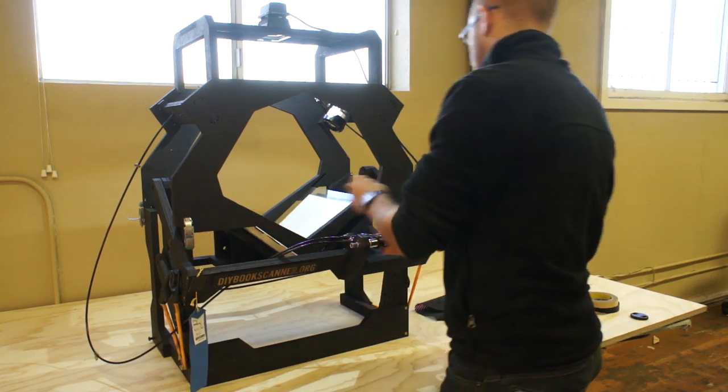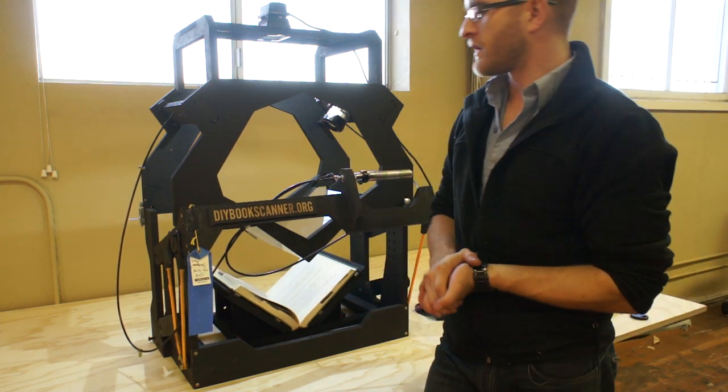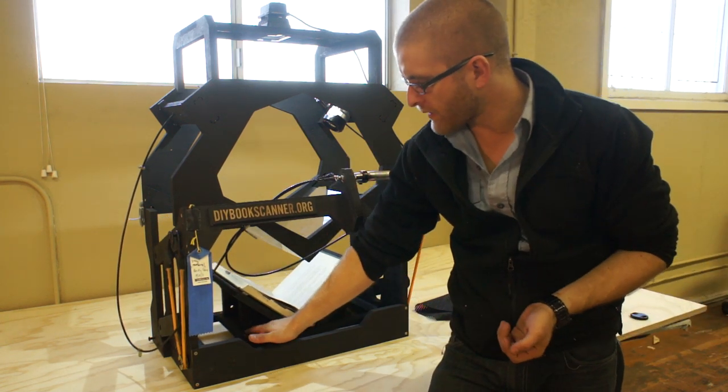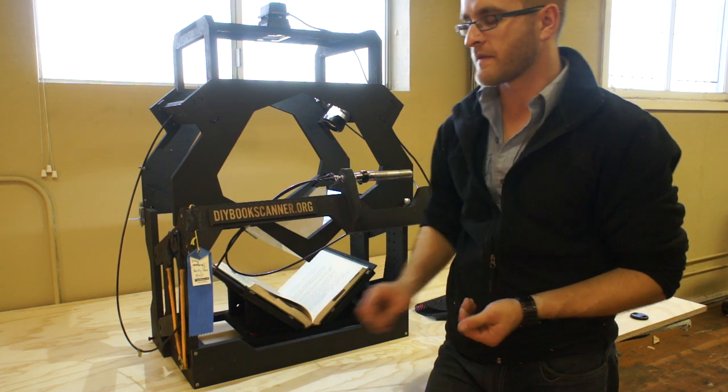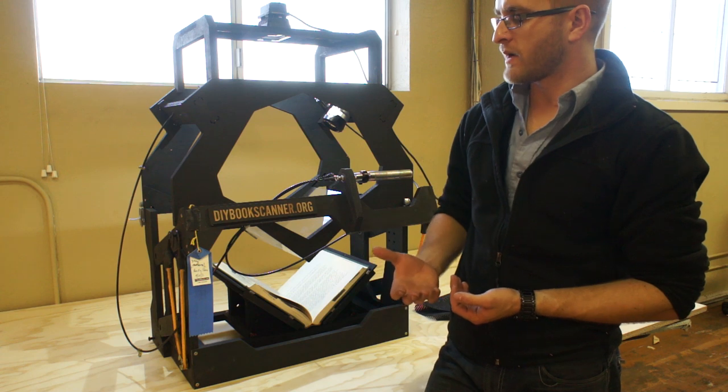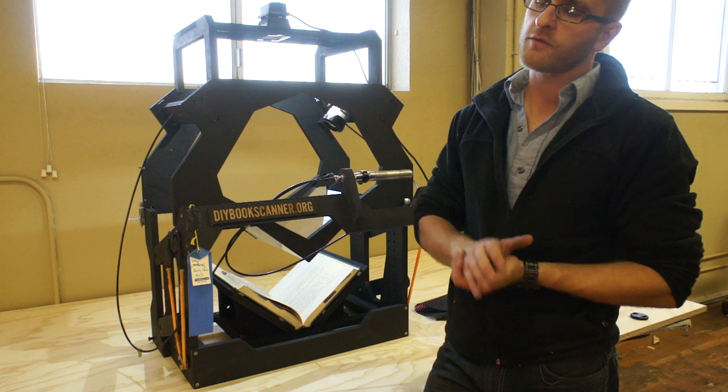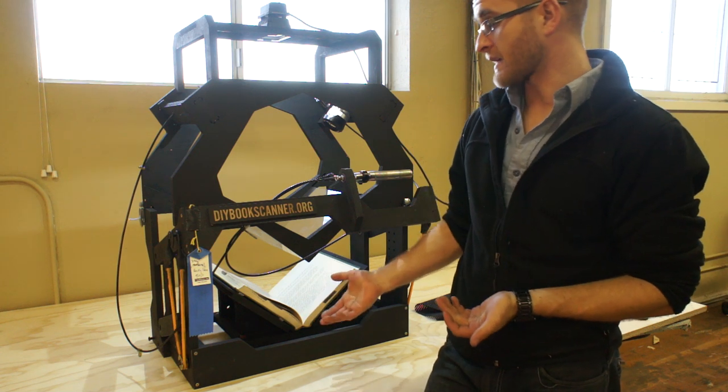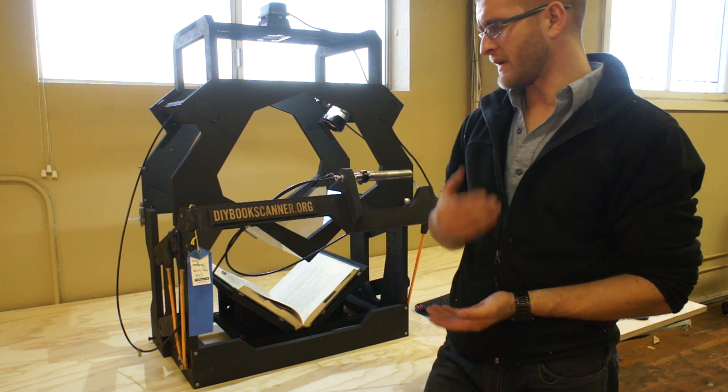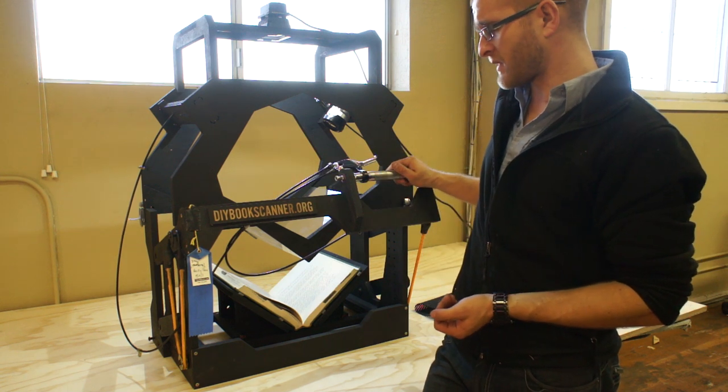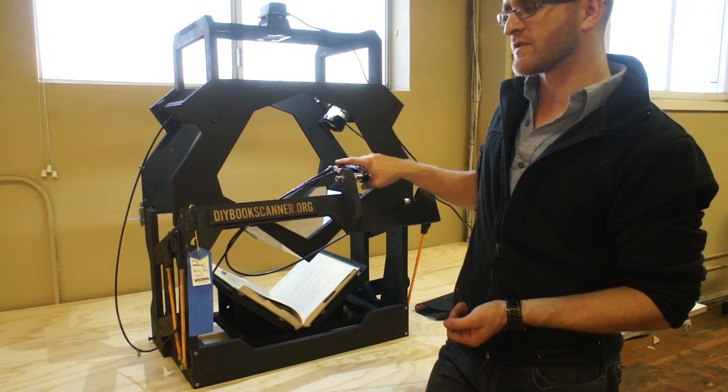One of the really important things about this scanner in my mind is that it's all made very carefully. For example, all the linear motion is supplied by skateboard bearings. The reason for that is because skateboard bearings are available worldwide, they cost almost nothing, and they're incredibly durable. If you're going to send a scanner like this into a place like Haiti, or even into somebody's basement, you want it to be easily repairable and easily understandable. Likewise with the bike parts. This is a bike seat post from a children's bike, and a dual bike brake lever from Amazon.